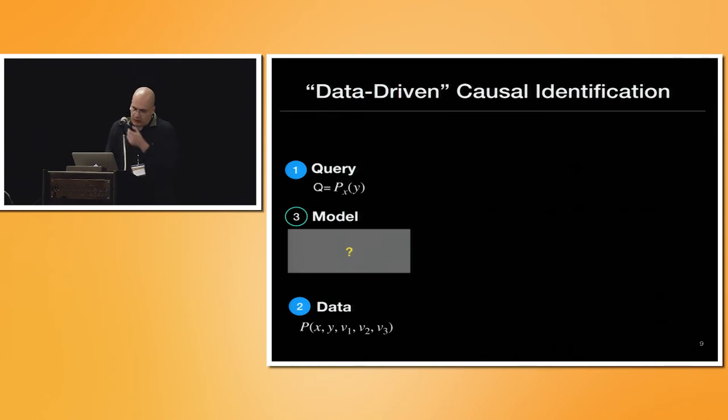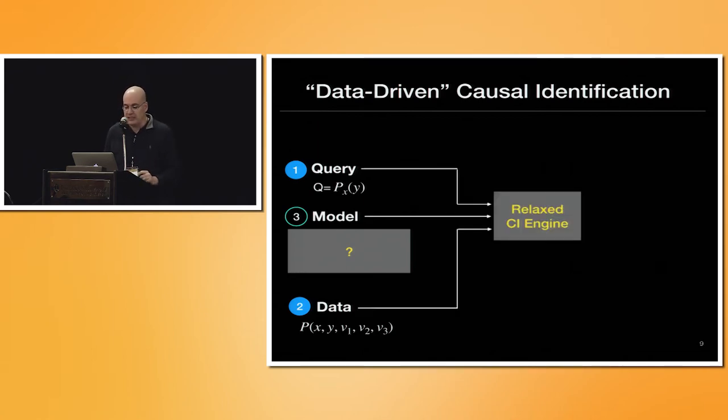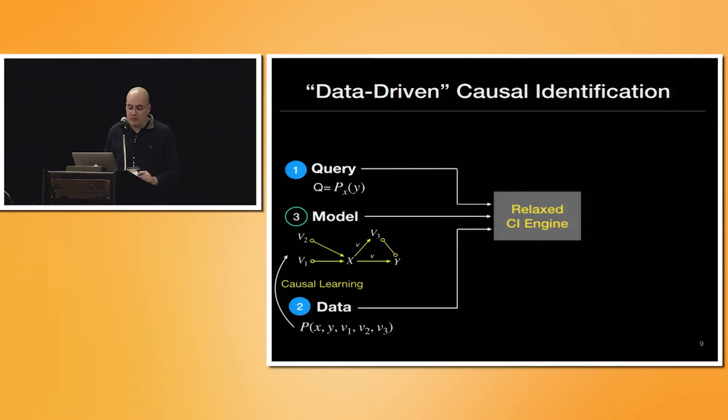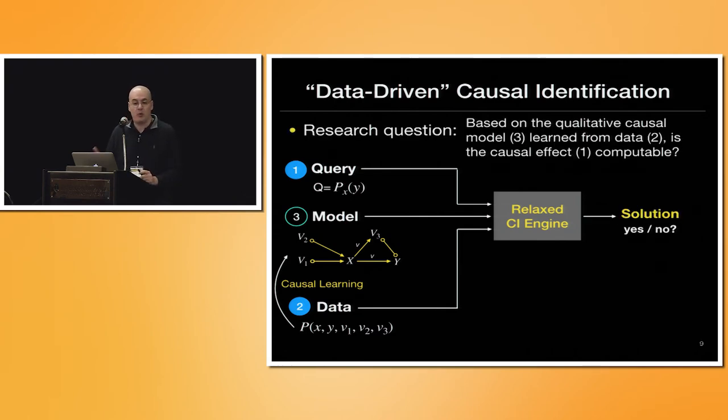Now you can naturally write the same version of the identification problem. I don't like this name, but I'm calling here the more data-driven version. Not fully, but I would say data-driven version of identification. That, first, we don't have the model, but then we can do some type of structural learning, for example, using the FCI. And then we get the PAG. Now we have a different, we don't have a causal inference engine. What I'm calling relaxed causal inference engine.